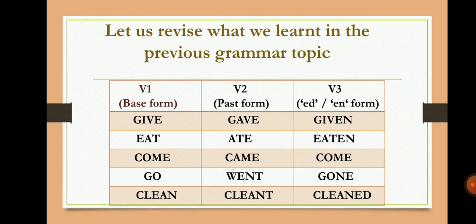Next, 'come' is the base form; the past form is 'came,' and in V3 form it will come as 'come' only. Next, 'go' — the past tense of go is 'went,' and in V3 form it will come as 'gone.' Next, the base form is 'clean,' the past form is 'cleaned,' and V3 form will also be 'cleaned.' So these are the V1, V2, and V3 forms — the three forms of the verb.